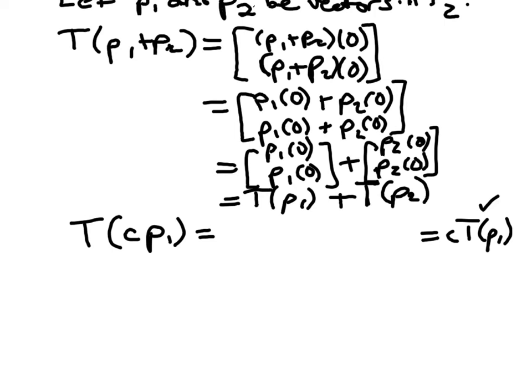But okay, so let's think about this step by step. T of C times P1. So the way this transformation works, we're thinking of this as a new polynomial, like seven times our original polynomial. So that would just be take the polynomial, evaluate at zero. Same thing down here. Take the polynomial, C of P1, evaluate at zero. So that's the way that this transformation was defined.